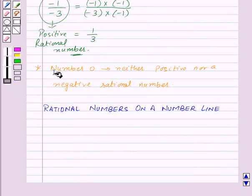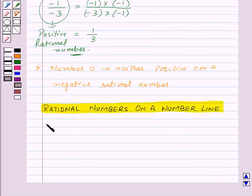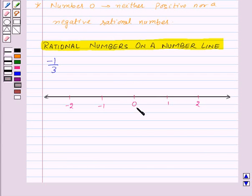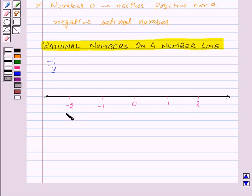Now let us see how to represent a rational number on a number line. Suppose we want to represent minus 1 by 3 on the number line. The points to the right of 0 are positive integers and the points to the left of 0 are negative integers. Positive rational numbers will be marked on the right of 0 and negative rational numbers on the left. Since minus 1 by 3 is a negative rational number, it will be marked on the left of 0.